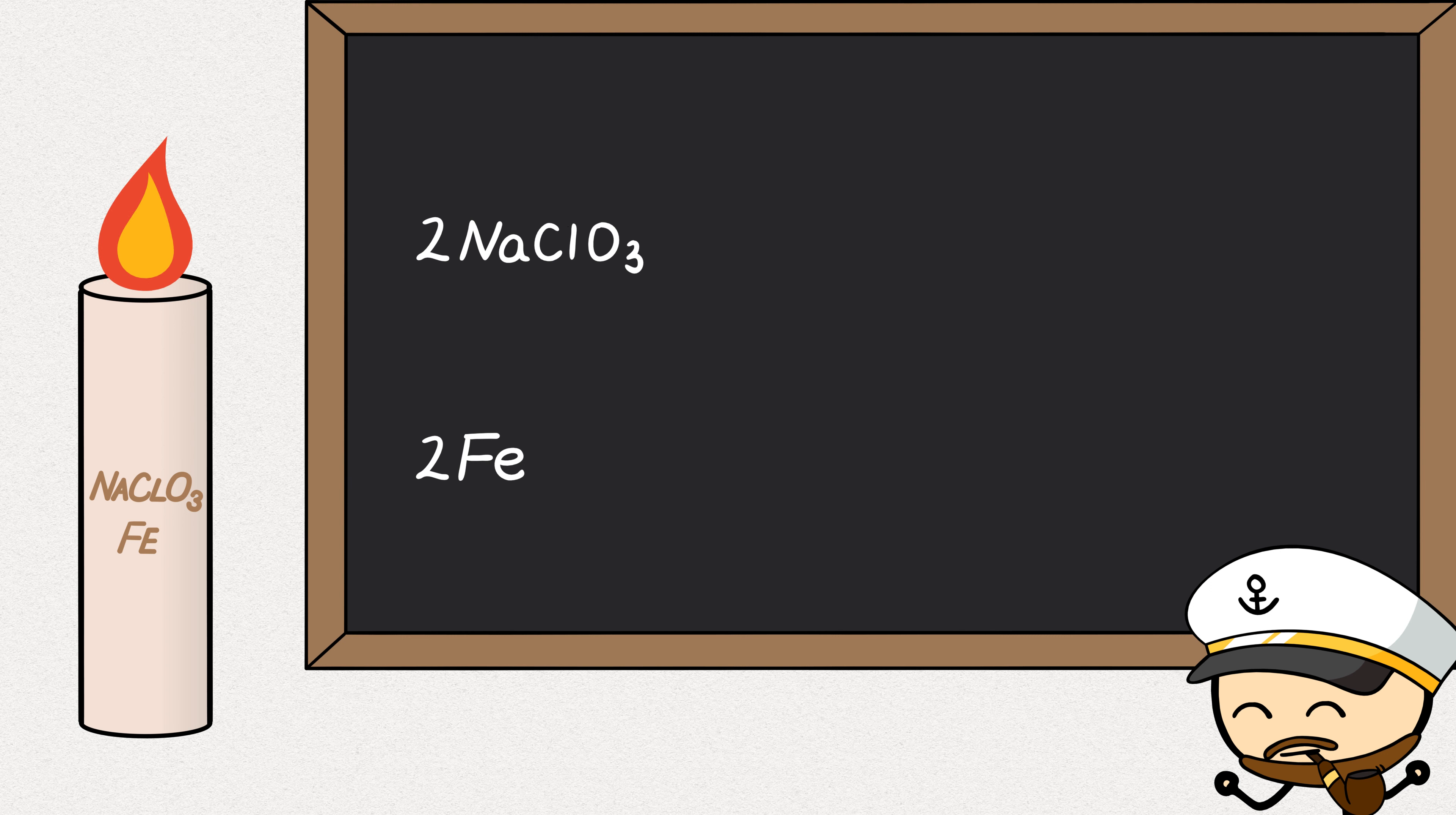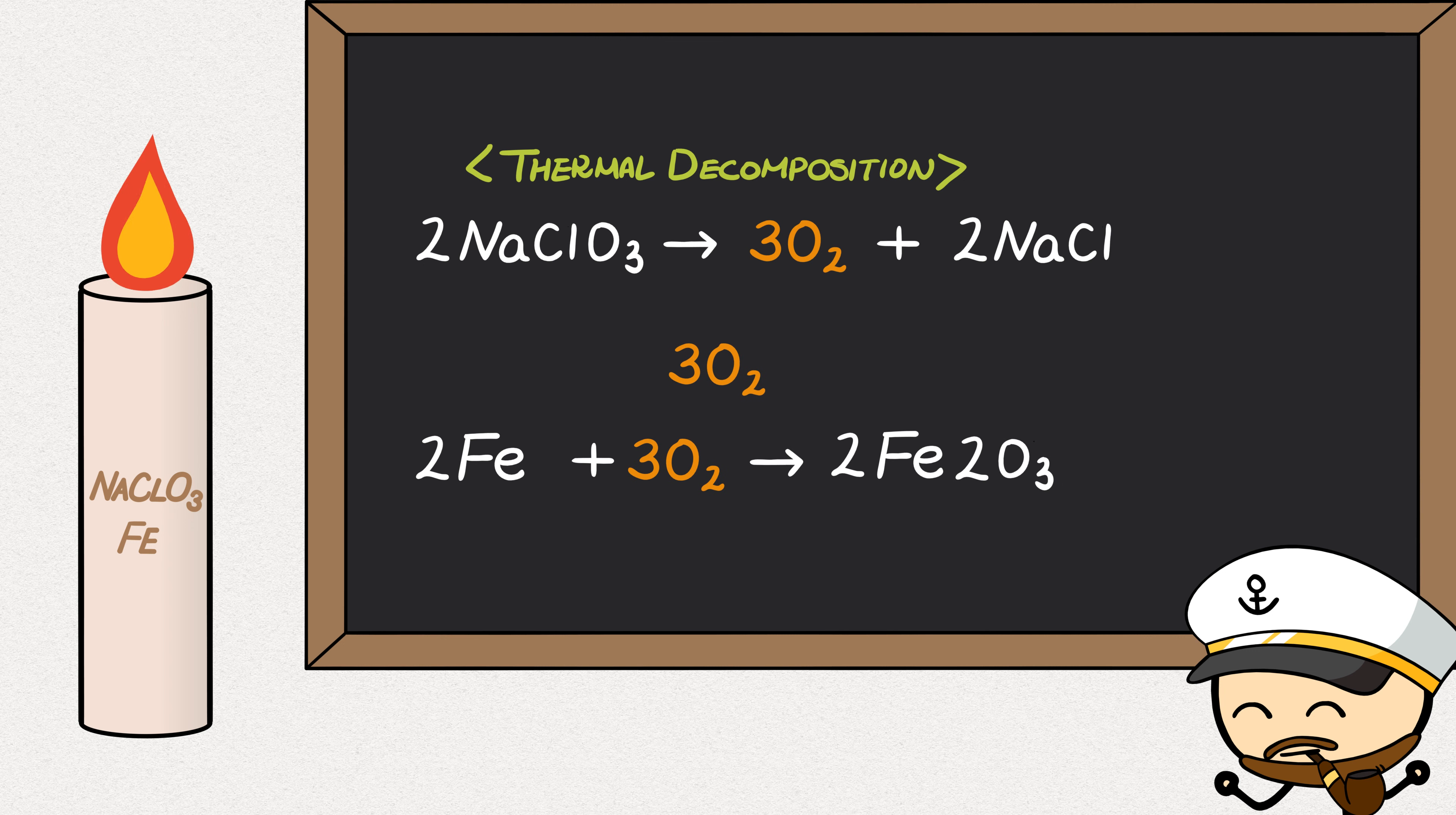When you light the candle, sodium chloride releases oxygen through a process called thermal decomposition, which is just a fancy way of saying that heat caused a chemical reaction. Some of this oxygen is used to burn the iron powder that creates the heat needed to keep this process going and the rest is released directly into the cabin.